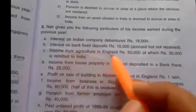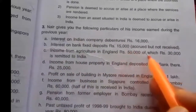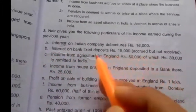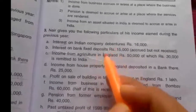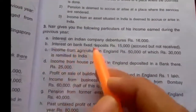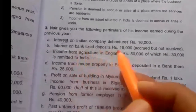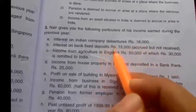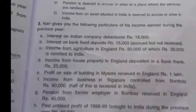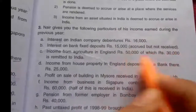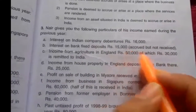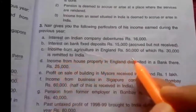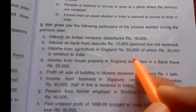Second, interest on bank fixed deposit Rs. 15,000, accrued but not received. Since no place is specified, it is assumed the fixed deposit is in India. Even though it is accrued but not received, it is still Indian income and taxable in all three columns: ordinarily resident, not ordinarily resident, and non-resident.